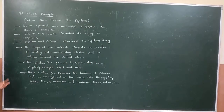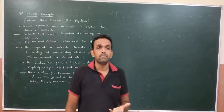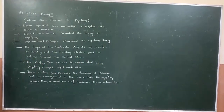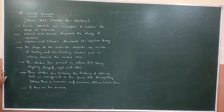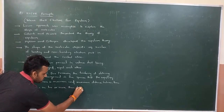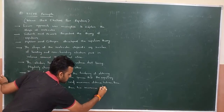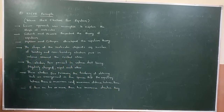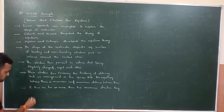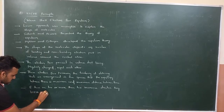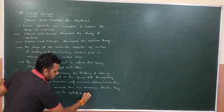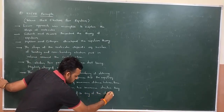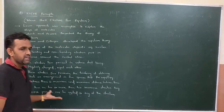If there are two or more than two resonance structures, then the VSEPR principle is applicable to any of the resonance structures. So if more than one resonance structure is there, then the VSEPR principle can be applied to any of the structures.